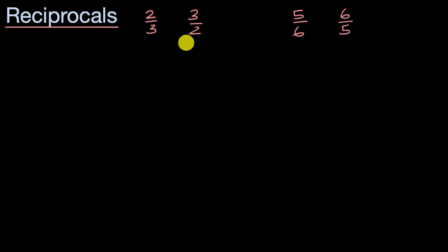And that's all well and good, but what does this actually mean? Well, one interpretation of a reciprocal is it's the number that when you multiply it by the original number, you get one. So 2/3 times 3/2, we'll see is equal to one, or 5/6 times 6/5 is equal to one.